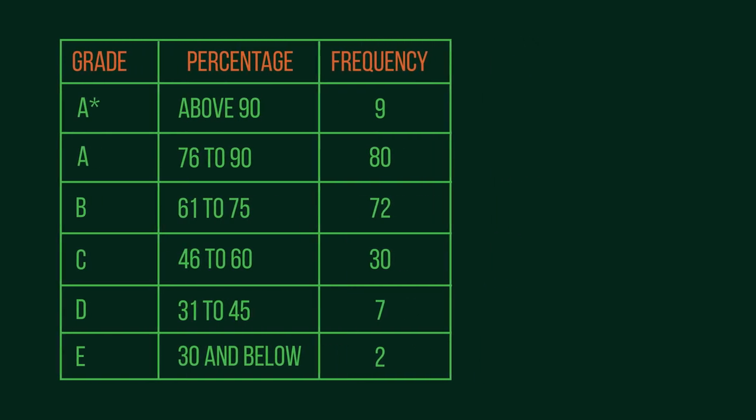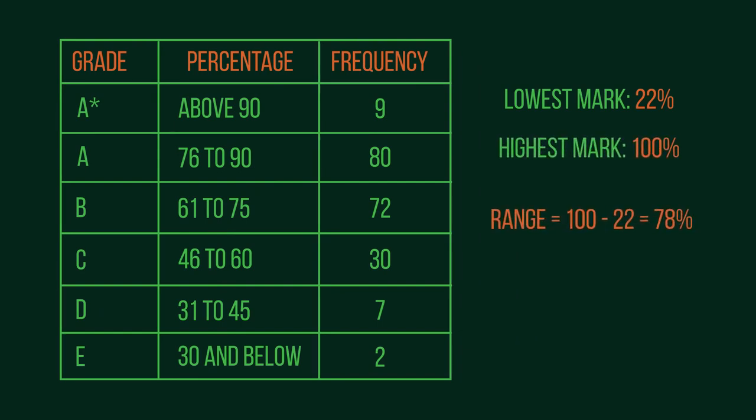We know the lowest mark was 22% and the highest mark was 100%, so the range of results is 78%. Now because we have A*, A, B, C, D, and E—so six groups—work out approximately how big each group should be by dividing the range by six. We want each group to be about 13% in size.